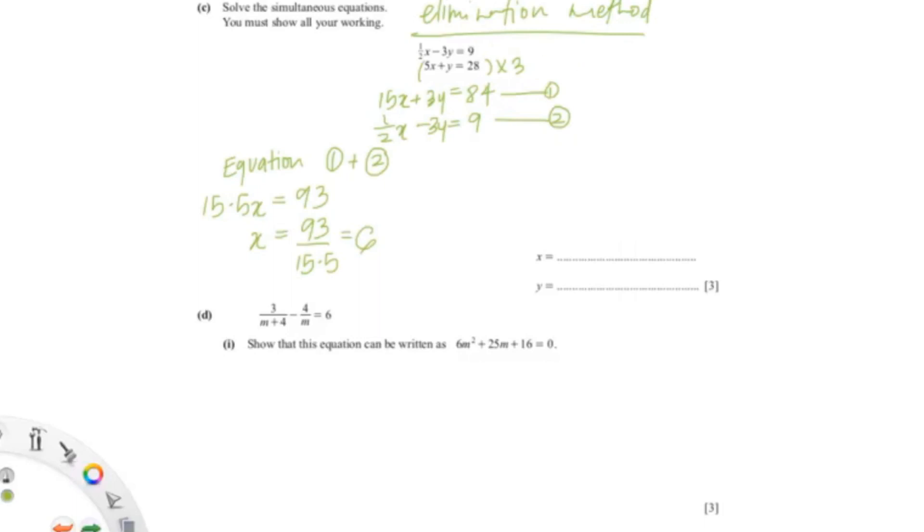From this equation, I made y the subject. So 5x+y=28. I brought 5x to the other side, which is 28-5x. So I made y the subject. And because we already found x, y would be 28-5(6), which is 28-30, which is -2.